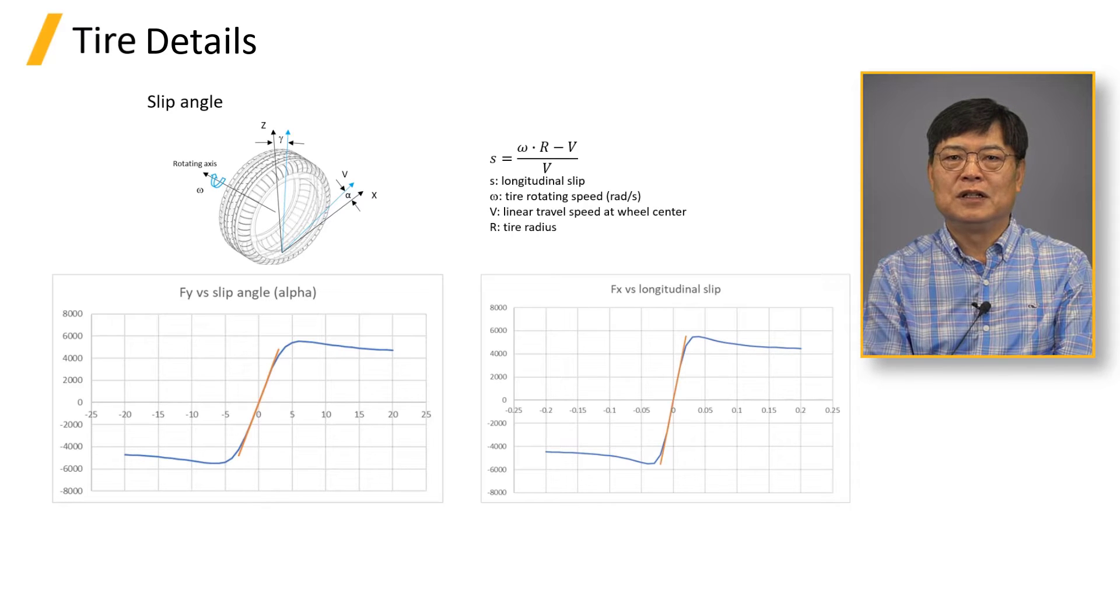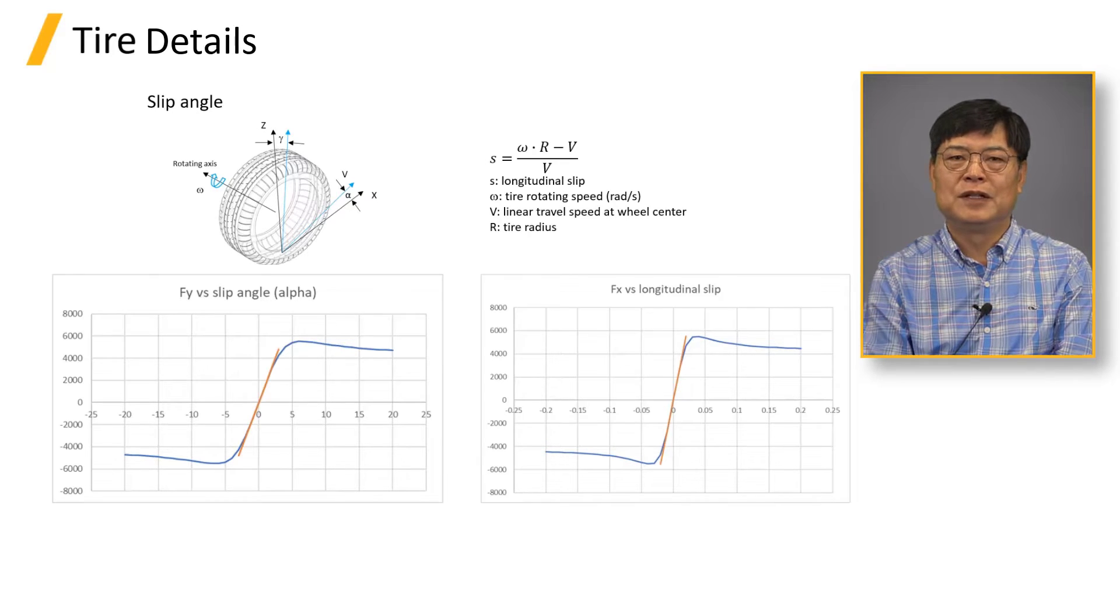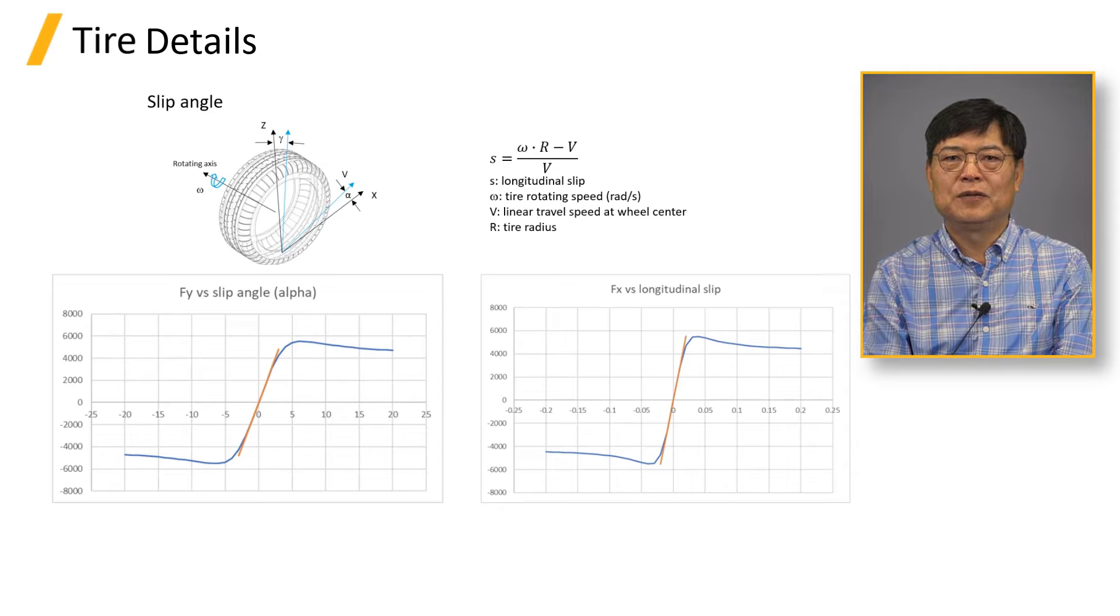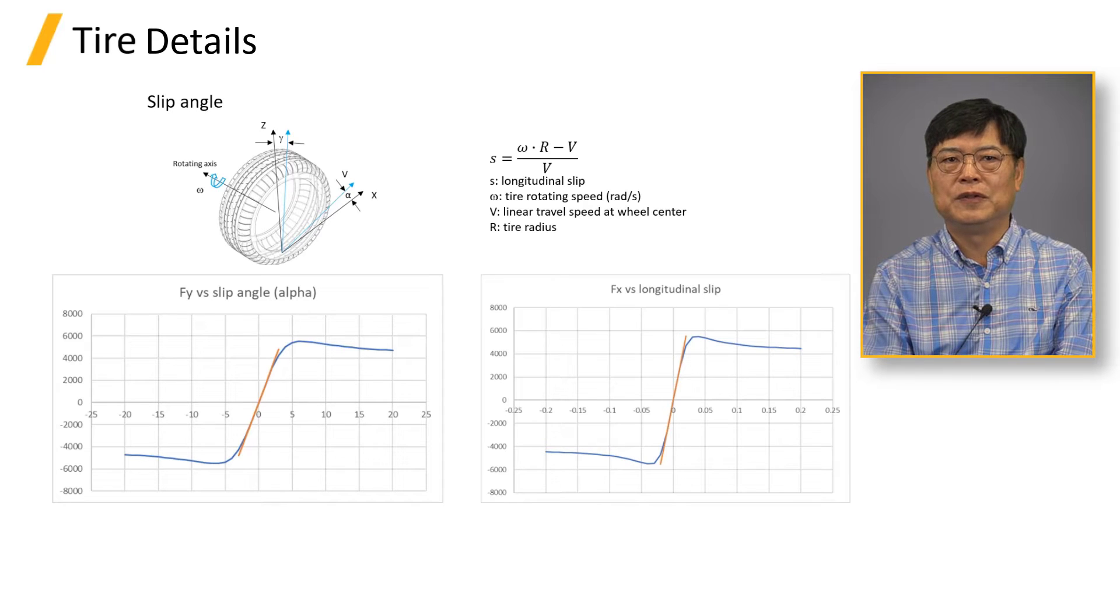The orange line in the plot is longitudinal stiffness. The peak in the tire fore-aft and lateral forces are determined by the tire normal force, the vertical force, and the friction coefficient between the tire and the road surface.